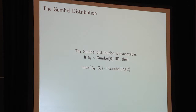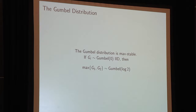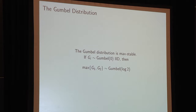The first is that the Gumbel distribution is known as max-stable: if we take a sample of independent Gumbels and look at the distribution of their max, that object is also Gumbel distributed, but with a different location. For example, if we sample G1 and G2 from Gumbel(0), then the max of those two is distributed as Gumbel(log 2).